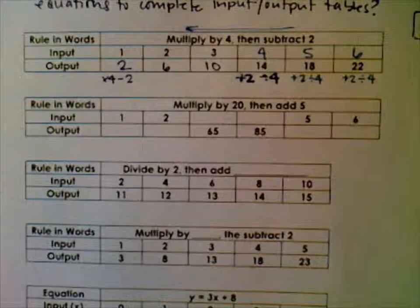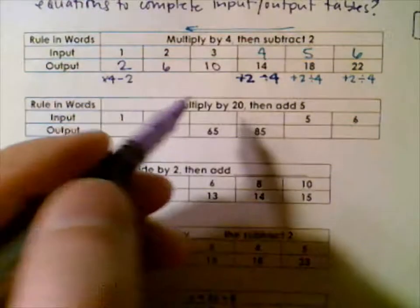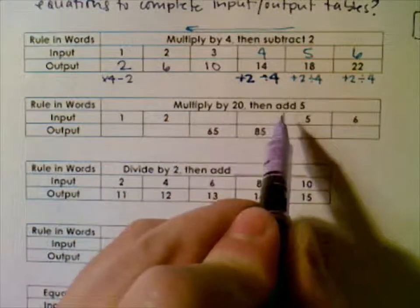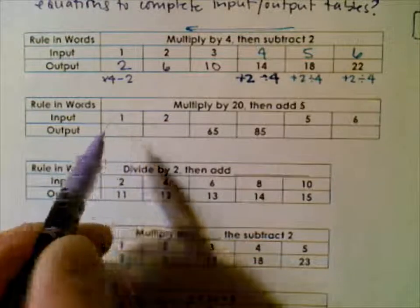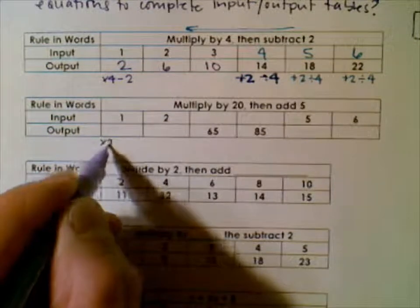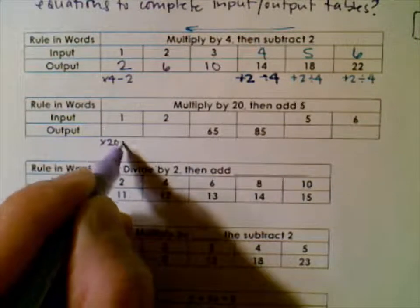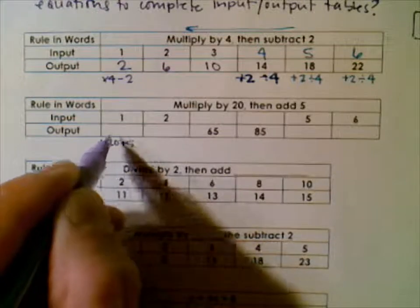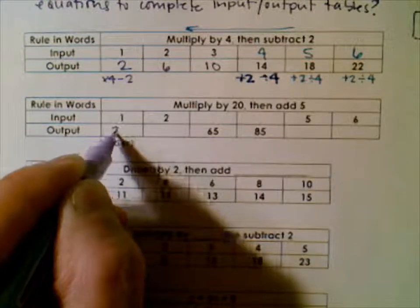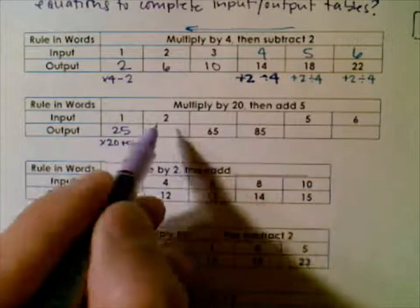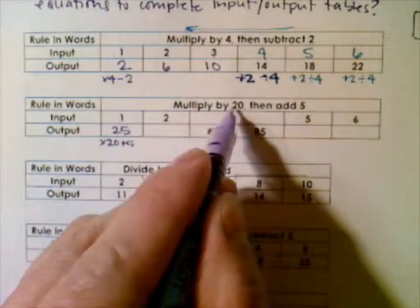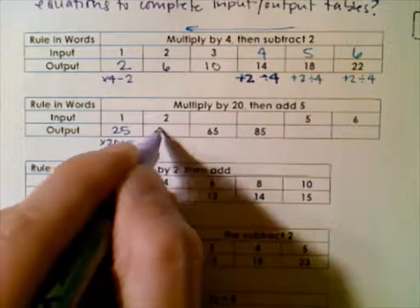Let's look at number two. The rule is: multiply by 20, then add 5. Input 1: 1 times 20 is 20, plus 5 gives us 25. Input 2: 2 times 20 is 40, plus 5 is 45.